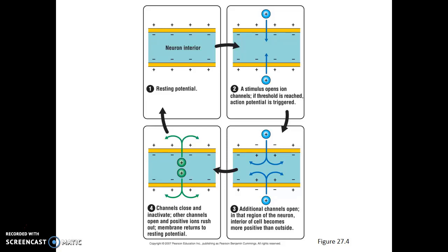A stimulus will open sodium ion channels along the plasma membrane. If threshold is reached — meaning enough of a stimulus opens enough ion channels — those positively charged sodium ions will rush into the neuron. This rapid movement of sodium ions in will cause neighboring sodium ion channels to also open. These channels are only open for a brief period of time, after which they close. Then the sodium-potassium pumps actively move sodium ions out again, quickly returning the cell to its resting potential.